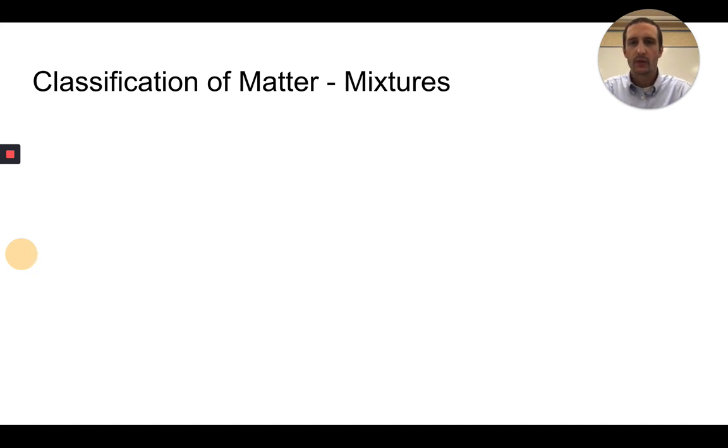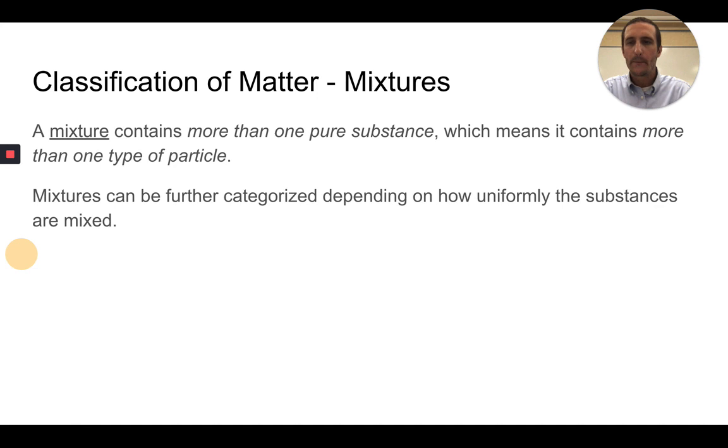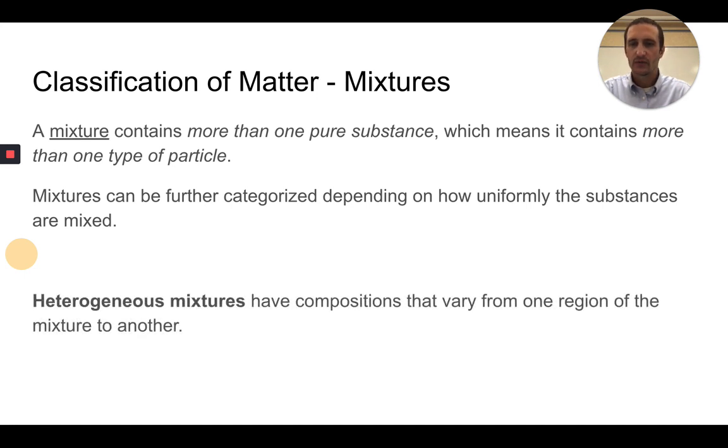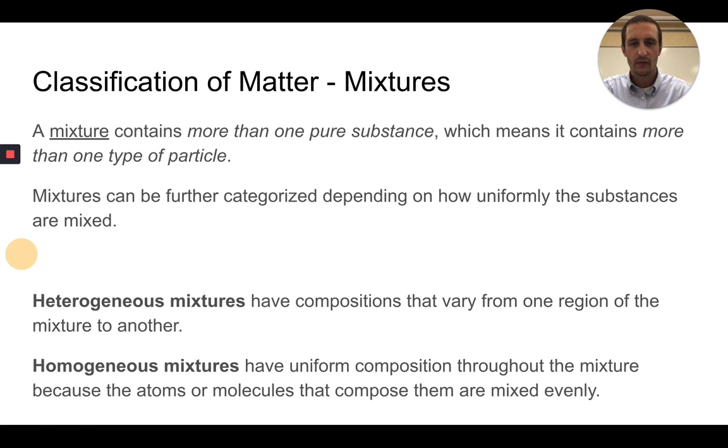Mixtures can be further categorized depending on how uniform the substances are mixed. There's really two types of mixtures: either a heterogeneous mixture, which has composition that varies from one region to another, or a homogeneous mixture.